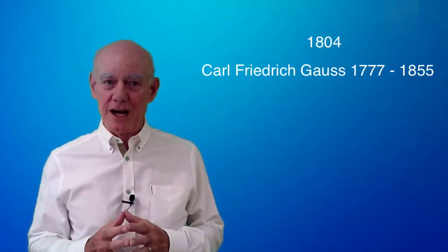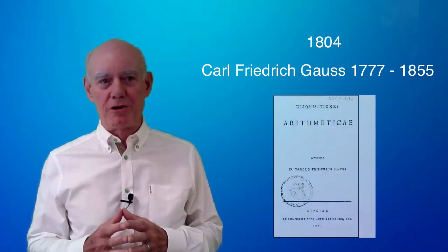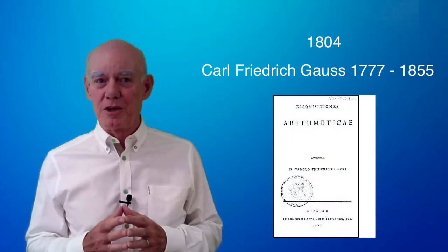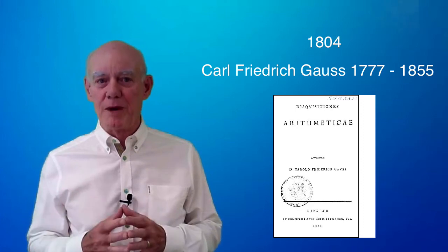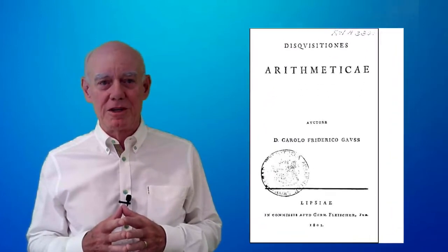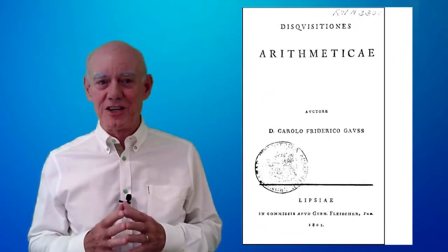The next significant thing that happens is in 1804 when the German mathematician Gauss publishes a book on number theory. Sophie gets a copy of this book and begins to read it and starts working through the mathematics and proofs in the book. After three years, she writes to Gauss.